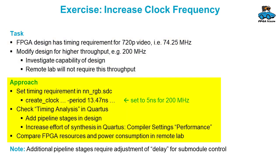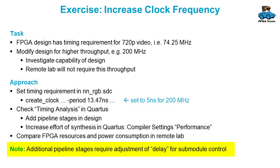As an approach, you modify the timing requirements in the SDC file. You will probably get timing errors in Quartus in the timing analysis, and you can add pipeline stages and also change the compiler settings. You can compare FPGA resources and power consumption in the Remotelab. Please note: if you add pipeline stages in the design, you also have to add these pipeline stages for the control signals.